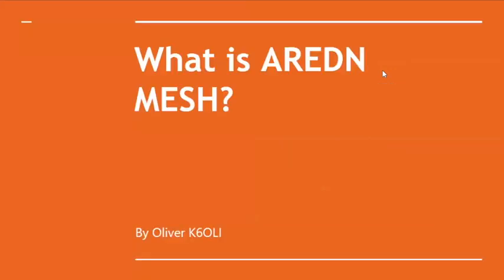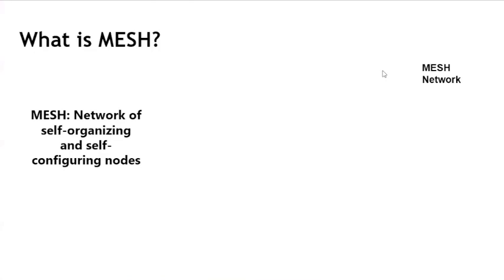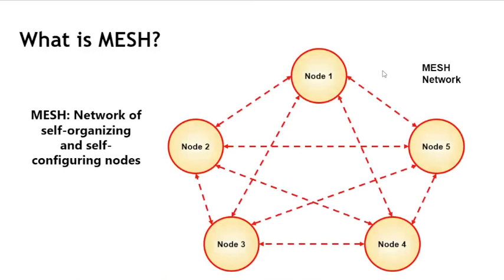What is a mesh altogether? Essentially, a mesh is a network of self-organizing and self-configuring nodes. That means there isn't a centralized organizing force — no central server or single router that takes care of all the addressing and all the traffic. Every node creates a map of all the other nodes it can see, both directly through RF and indirectly through all the other nodes it's connected to. It also calculates how costly it would be to send packets of data to any node on the mesh network.